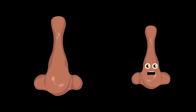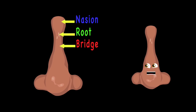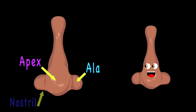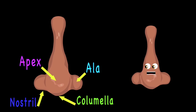Let's start with the parts of the nose that you can see. The nasion, root, and bridge are the first parts of three. Then the ala, apex, nostril, and columella are parts of your nose whether you're a girl or a fella.